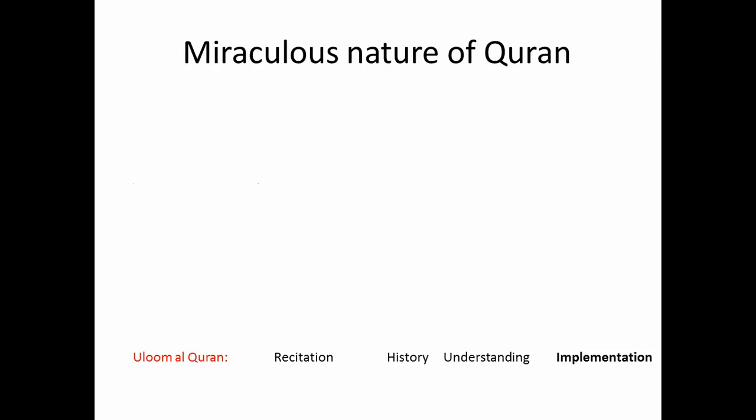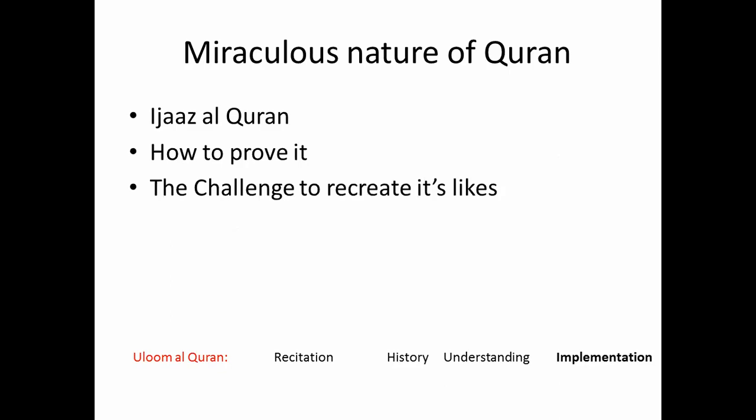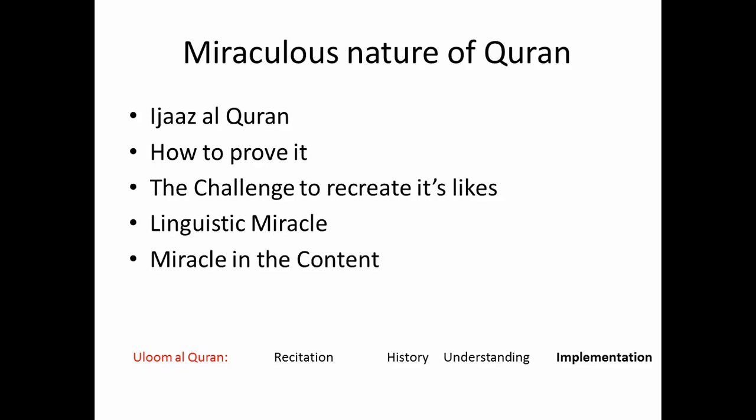Then there's the miraculous nature of the Qur'an, and this comes in the implementation phase — the i'jaz Al-Qur'an: how the Qur'an makes us 'ajiz, what are the miracles contained in the Qur'an, how we can prove all of these miraculous areas, how they impact the heart, and the challenge to recreate its likes. There was a challenge given in the Qur'an — you must have studied about that in Surah Al-Baqarah — and no one has been able to recreate the likes till this day, hundreds of years later. Then the linguistic miracle — the miracle in the language of the Qur'an — is also a chapter we're going to do in Uloom Al-Qur'an.